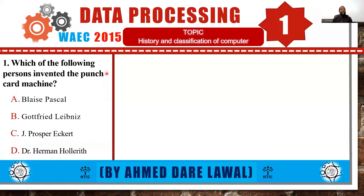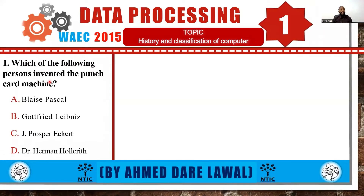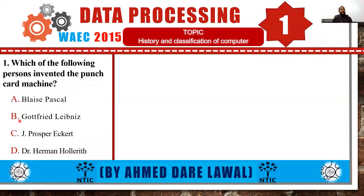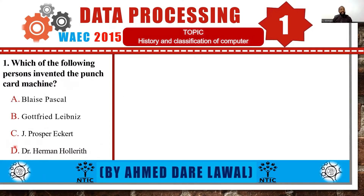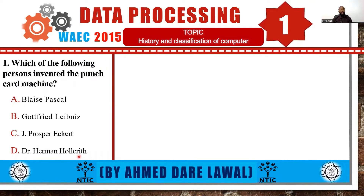The first question says: which of the following persons invented the punch card machine? A. Les Pascal, B. Godfrey Leibniz, C. J. Prosper Herkert, and D. Dr. Eamon Olereth.